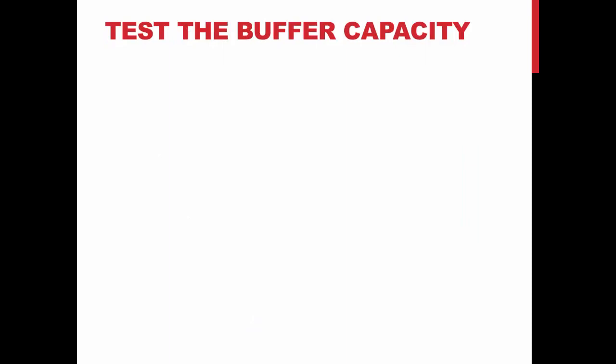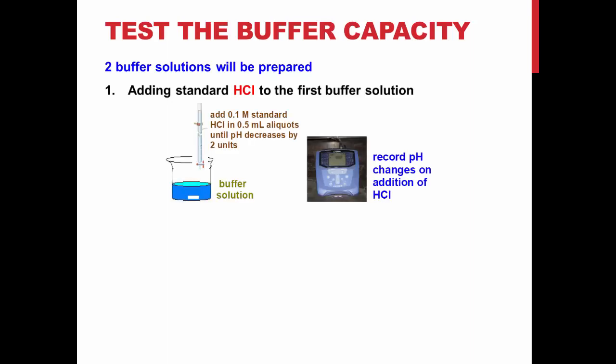You will obtain a pH meter and perform a two-point calibration. Set up a burette containing 0.1 M hydrochloric acid and place one of your prepared buffer solutions, containing a magnetic stir bar, below it.